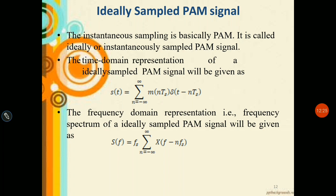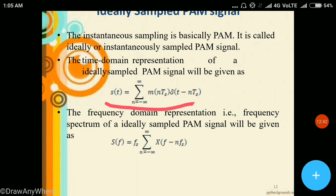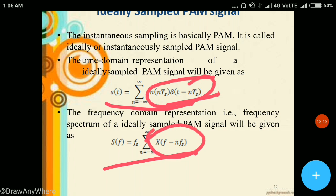Next is the ideally sampled PAM signal. Instantaneous sampling is basically PAM, called ideally or instantaneously sampled PAM. The time domain representation is: s(t) = Σ m(nTs) · δ(t − nTs), introducing a delta function. The frequency domain representation — the frequency spectrum of an ideally sampled PAM signal — is: S(f) = Fs · Σ X(f − nFs), where the summation is from n = −∞ to +∞.